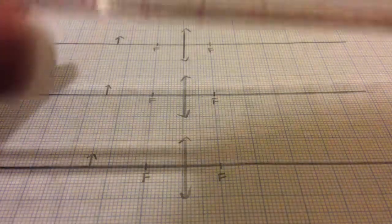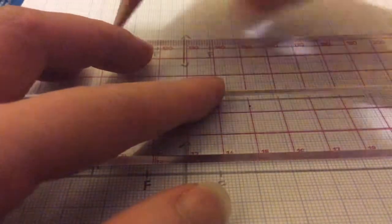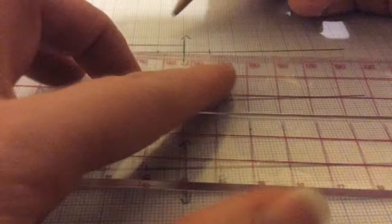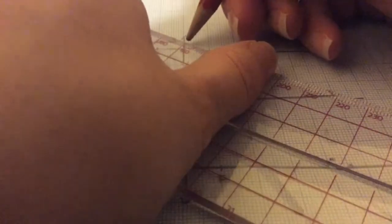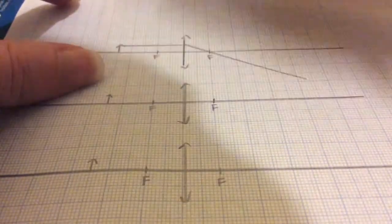The first ray that I draw will go from the object parallel to the principal axis until it hits the lens. Once it goes through the lens it will pass through the focal point. There you see the finished ray.